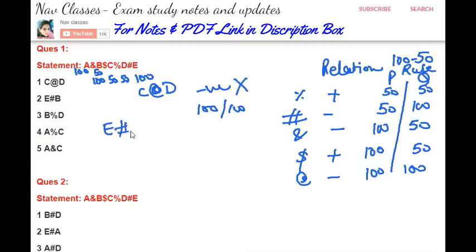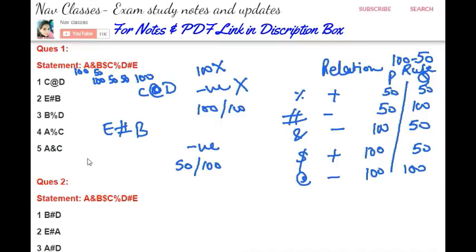For E#B: hash means negative, 50-100 relation. E is here and B is here. Can we combine C and D? No — they have 50-50, no single 100 present. Cannot reach from E to B via C and D. First condition not satisfied; reject this conclusion. For B%D: percent means positive relation, 50-50 must be there. D is here, B is here. Can we combine C and D? No — no 100 with C or D. First step not satisfying; reject.